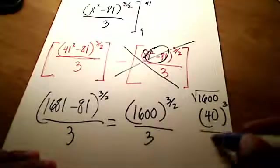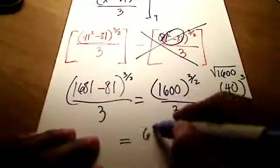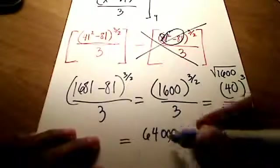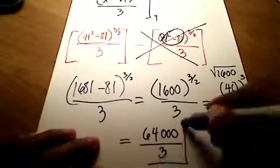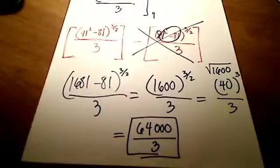So there is my final answer: 64,000 all over 3. I hope that helps.